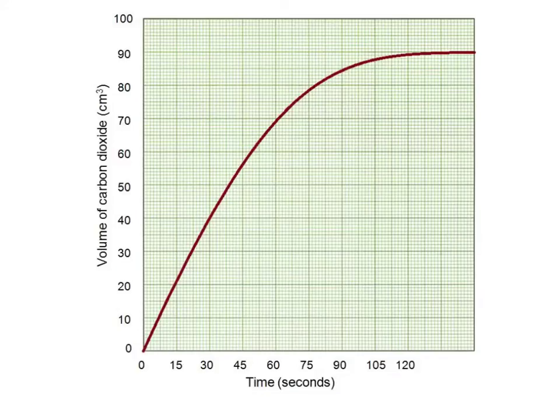Doing that, we tend to get a line like this one, and you'll see these commonly on exam questions, with time along the bottom, and the product up the side. Note that the reaction is fastest at the beginning, slows down as the concentration of the reactants decreases, until eventually the reaction stops. You can tell when it stops, it stops at the point where the graph levels out, for example here at 90 cubic centimetres of gas.